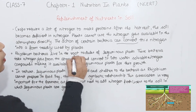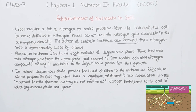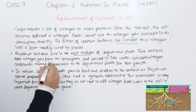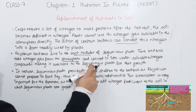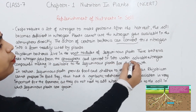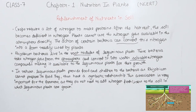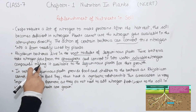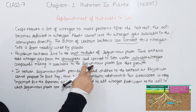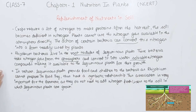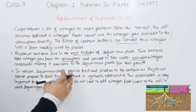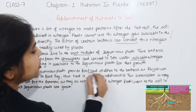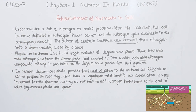Rhizobium bacteria live in the root nodules of leguminous plants. These bacteria take nitrogen gas from the atmosphere and convert it into water-soluble nitrogen compounds, making it available to the leguminous plant for their growth.